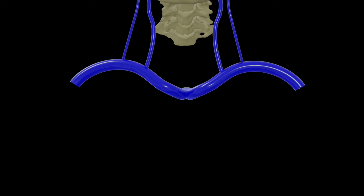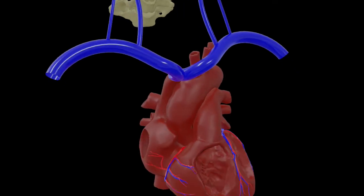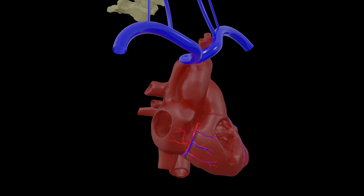After receiving all these veins, our internal jugular vein opens into the subclavian vein. The external jugular vein also opens into the subclavian vein, which brings venous blood from the upper limb. The thoracic duct, which brings lymph from the entire body, also opens here. Now this subclavian vein is called the brachiocephalic vein. This brachiocephalic vein, after receiving a few veins like the vertebral vein and inferior thyroid vein, unites with the counterpart of the opposite side to form the superior vena cava, which drains into the right atrium of the heart.